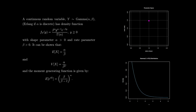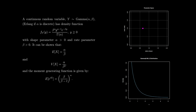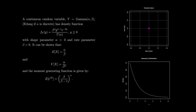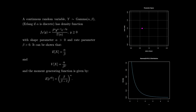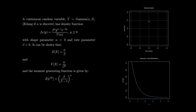The mean of the gamma distribution is alpha divided by beta, and the variance is alpha divided by beta squared — very simple results to remember. The moment-generating function is given by (beta / (beta − t))^alpha. You can almost already see the relationship between the exponential and the gamma distribution in the moments and moment-generating function. Consider the following setup.